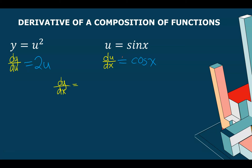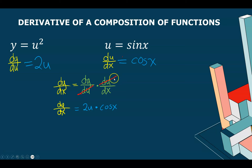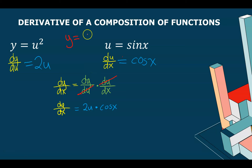We multiply dy/du times du/dx to get dy/dx. Substituting, dy/du = 2u and du/dx = cos(x). We don't want to leave u, so we replace it with sin(x). Therefore the derivative of sin²(x) is 2sin(x) · cos(x).